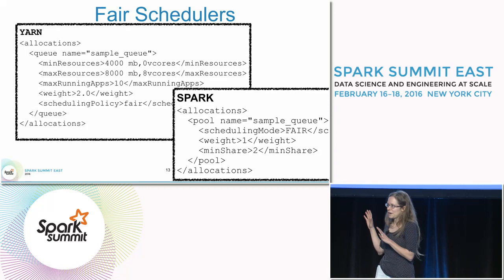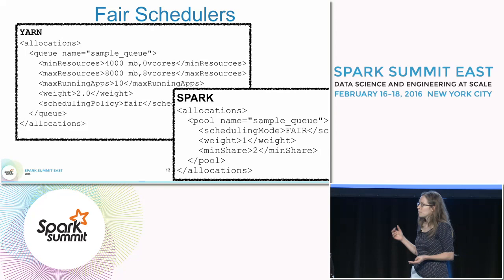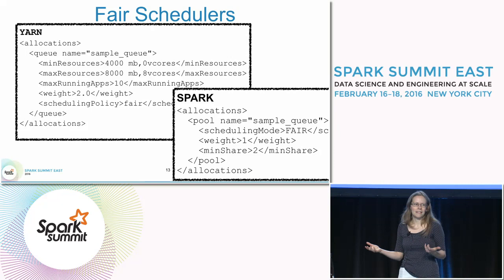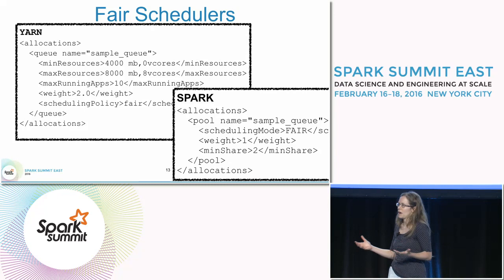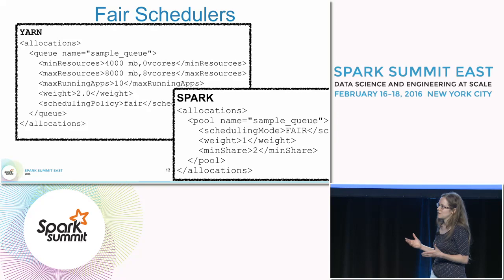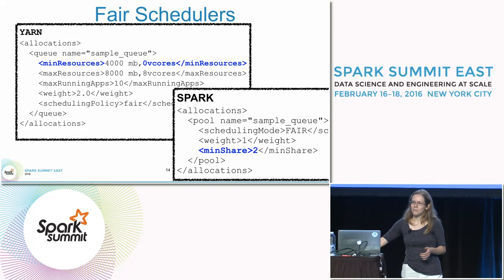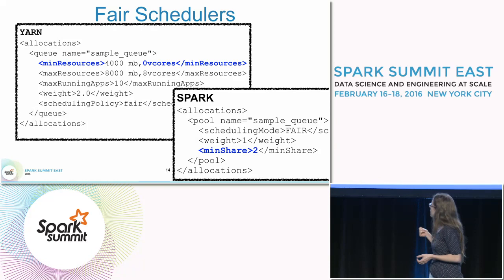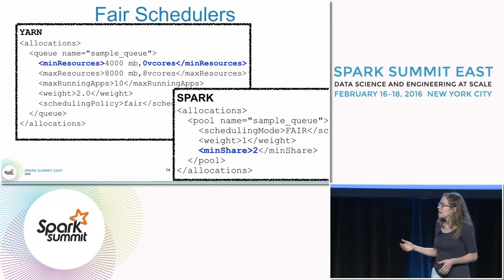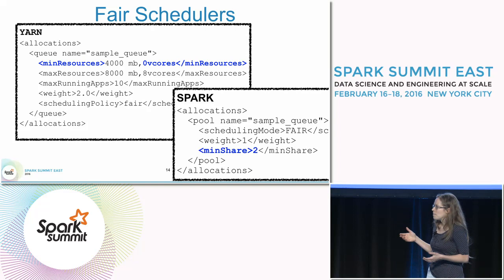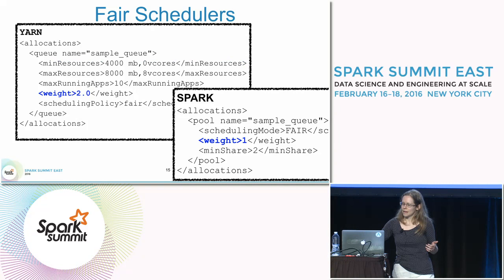The fair scheduler is something you definitely want to use, but the Spark fair scheduler is different than the YARN fair scheduler. Most people in the enterprise space are deploying Spark in YARN cluster mode — that's what our customers are centering on at the moment. There are some things shared between the Spark fair scheduler and the YARN fair scheduler — for example, the allocation for virtual cores. On the Spark side it's called your min share, and on the YARN side it's called your minimum resources for virtual cores. Definitely set this for your needs in your particular pool.